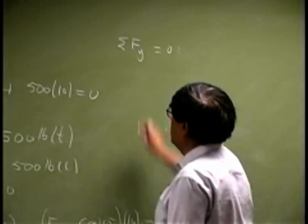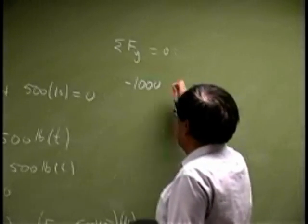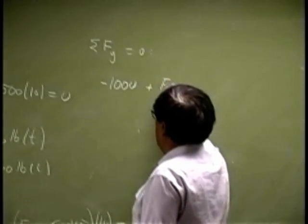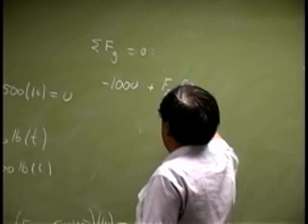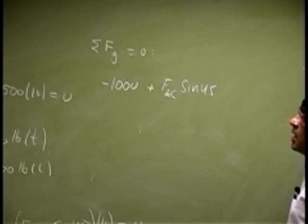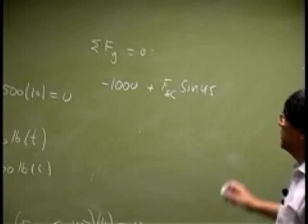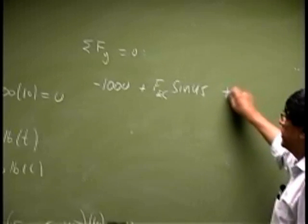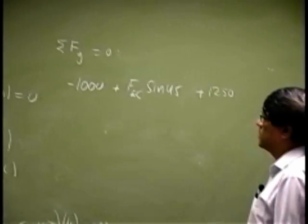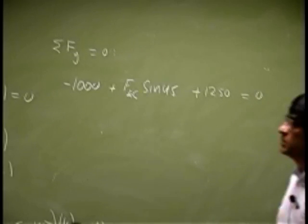If I do that, you get 1000 going down, plus FEC sin 45 that is up, then we have another force that is 1250 going up, and this should add up to zero.